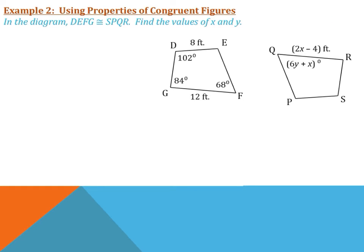Let's move on to example two, where we're going to use the properties of congruent figures to determine the values of X and Y. Start by identifying congruent parts with marks on our figures. We can do this by looking at our congruency statement — D is in the first position and S is in the first position, therefore they are congruent. Do that for the rest of the letters to identify all corresponding angles and sides.